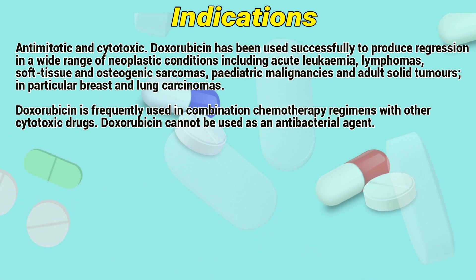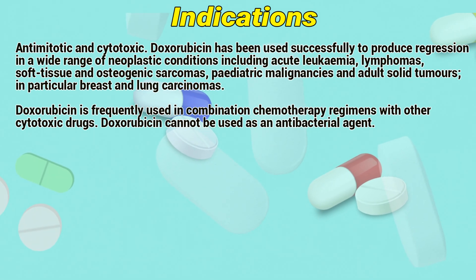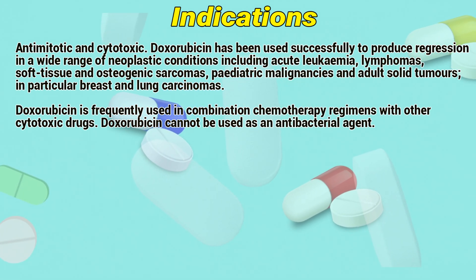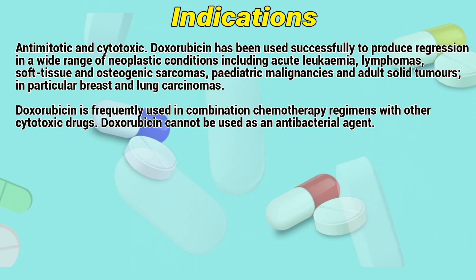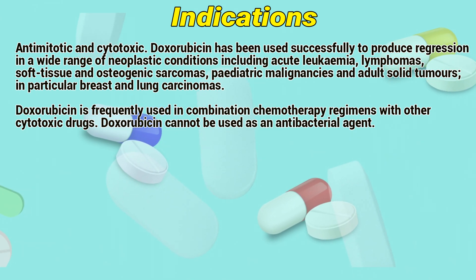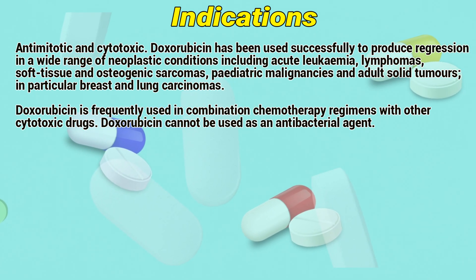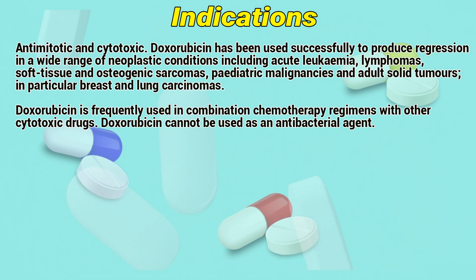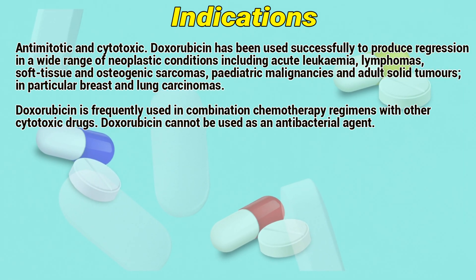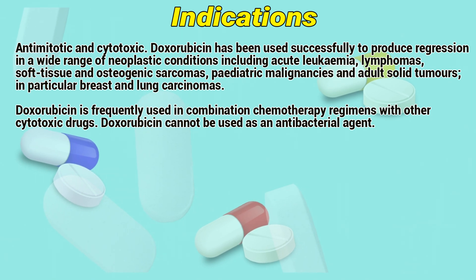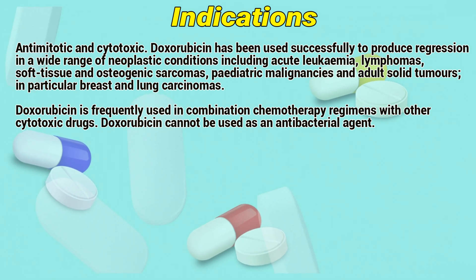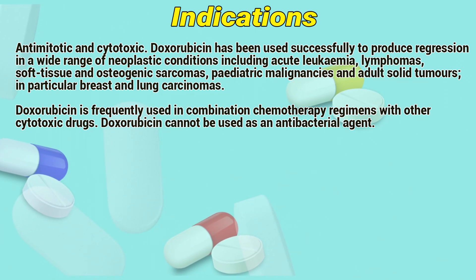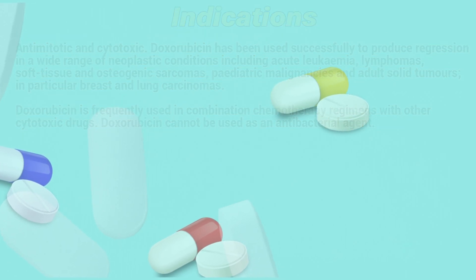Antimitotic and cytotoxic, doxorubicin has been used successfully to produce regression in a wide range of neoplastic conditions including acute leukemia, lymphomas, soft tissue and osteogenic sarcomas, pediatric malignancies and adult solid tumors, in particular breast and lung carcinomas. Doxorubicin is frequently used in combination chemotherapy arrangements with other cytotoxic drugs. Doxorubicin cannot be used as an antibacterial agent.